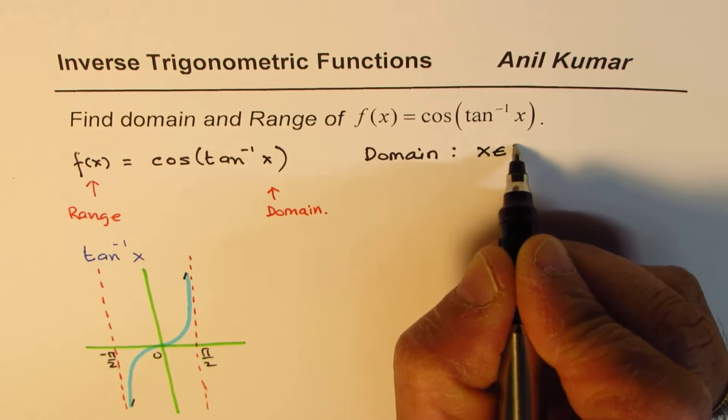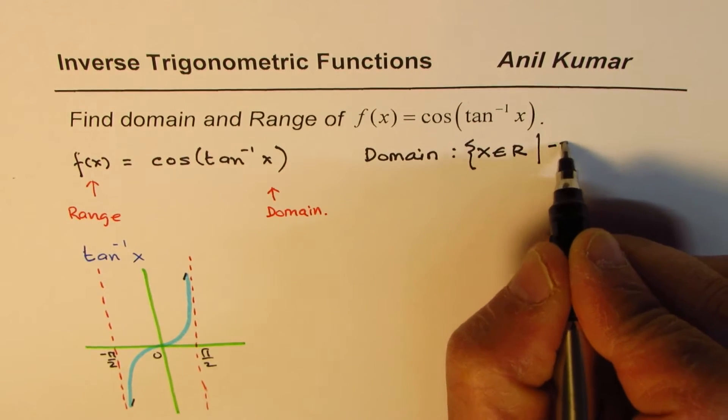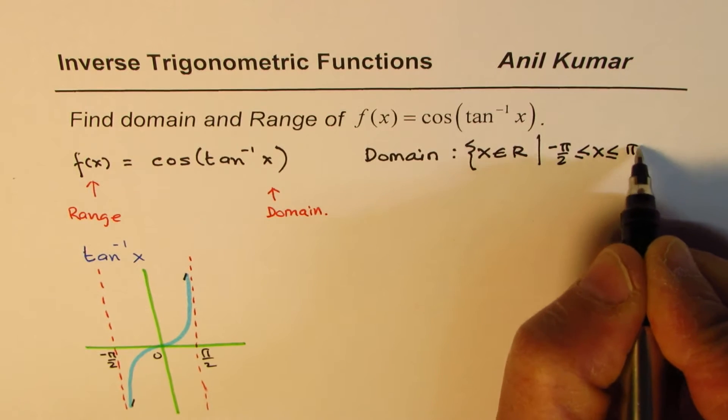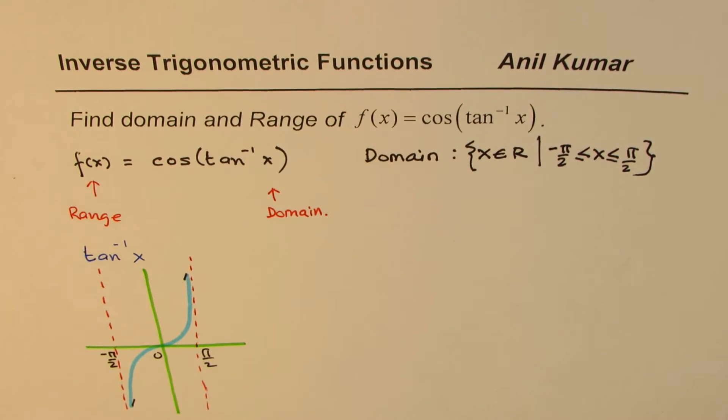We have domain: x belongs to real numbers where x is from -π/2 to +π/2. That is the domain for this function. Now let's look into the range part of it.